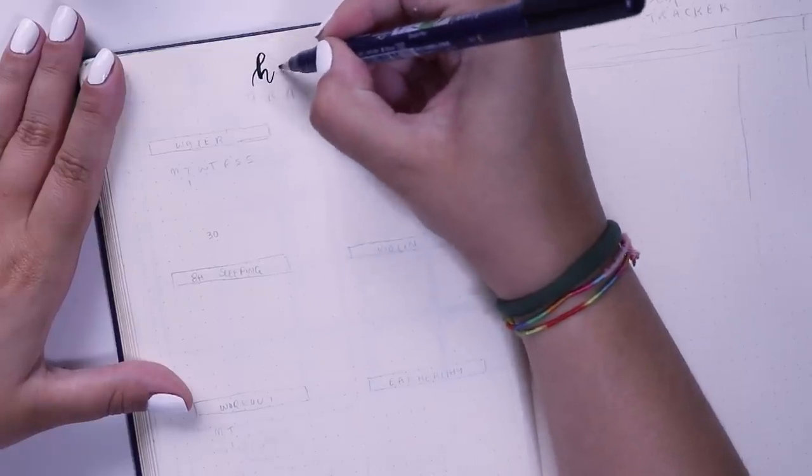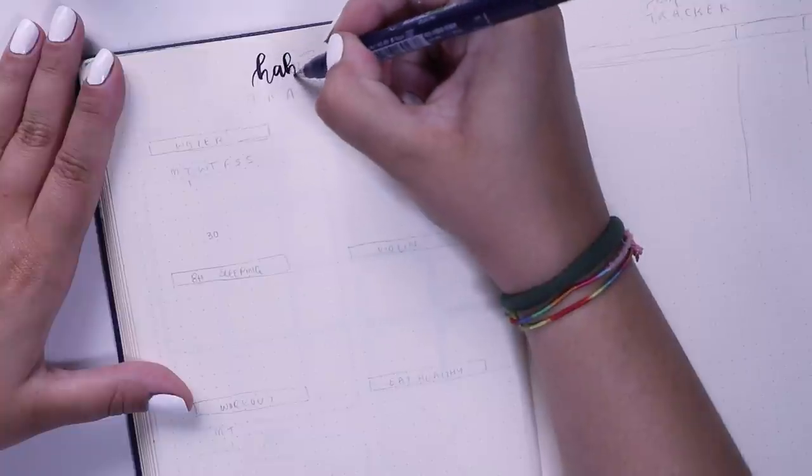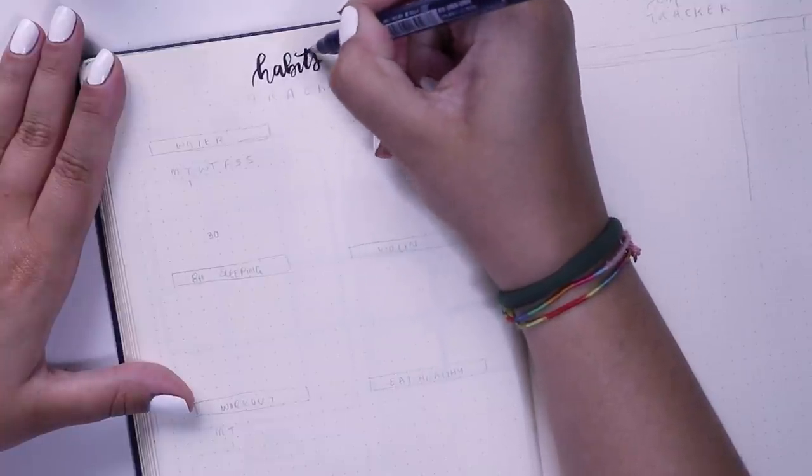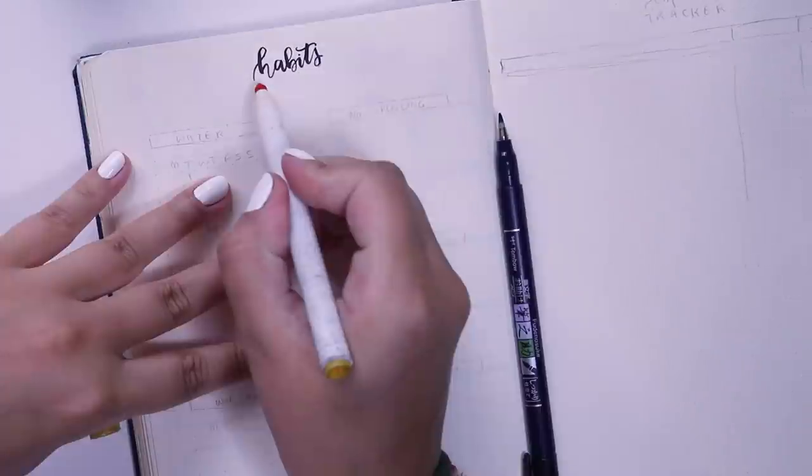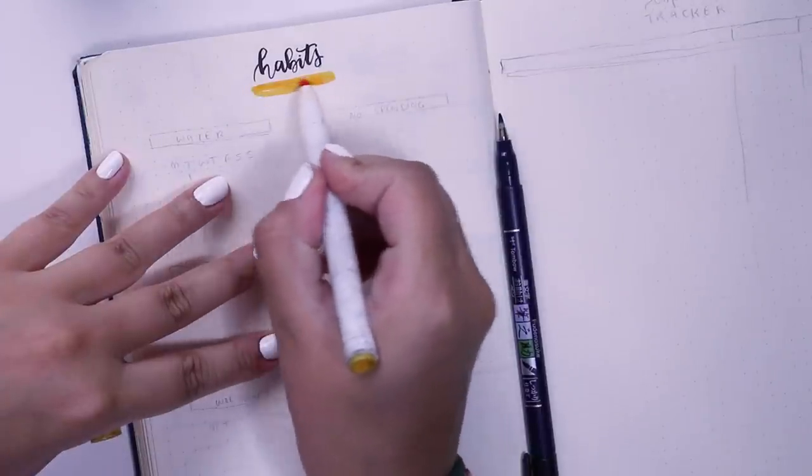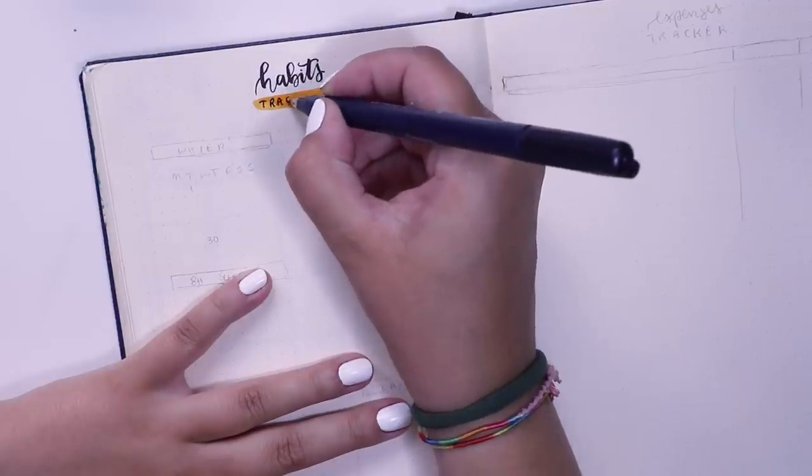Next up, we've got my habits and expense trackers. For my habits tracker, I just wrote out habits in cursive at the top, and then added a little oval stripe at the bottom and wrote in trackers.